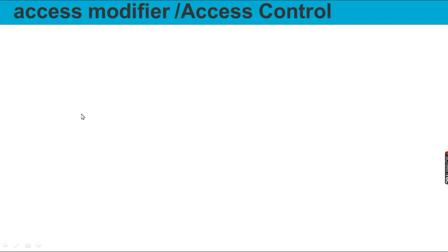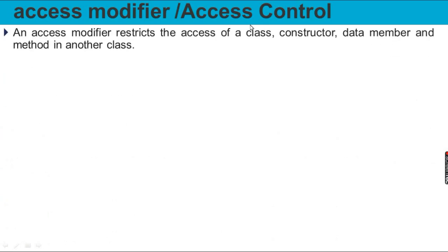The same thing applies in Java. We have to use the code to define Java. We have access to the class. We have access modifier. We have access control defined. So access modifier restricts the access of class, constructor, data member, and methods in other classes.